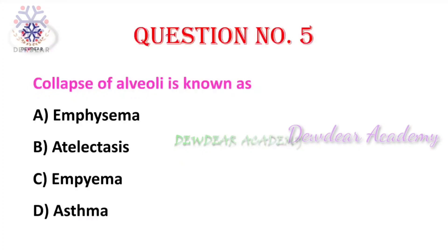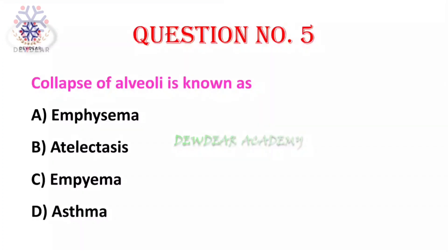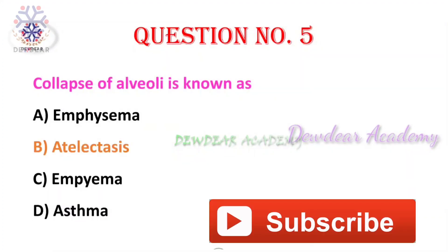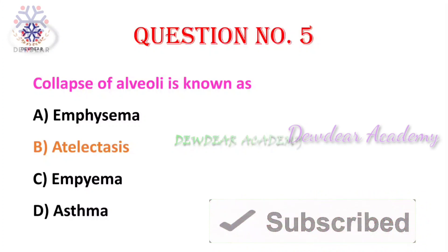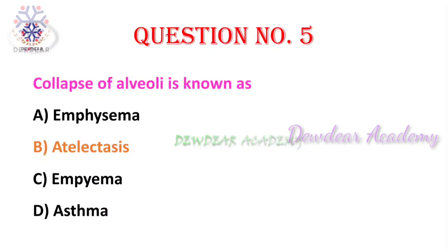Question 5: collapse of alveoli is known as — options: emphysema, atelectasis, empyema, asthma. The right answer is atelectasis. Emphysema is a type of COPD characterized by breakdown of elastin and collagen resulting in hyperinflation of alveoli. Empyema is accumulation of thick purulent fluid in the pleural space. Asthma means increased responsiveness of airways to a variety of stimuli.